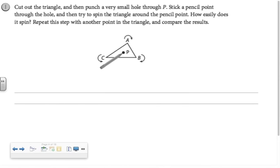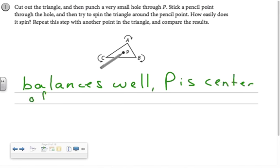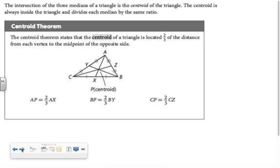In this activity, cut out the triangle and punch a small hole through P and try spinning the triangle around the pencil point. How easily does it spin? It should spin very easily. Point P, the centroid, your book calls it the balancing point. Other textbooks may call it the center of gravity. Here we have the centroid theorem, which is saying that the length of the segment from the vertex to the centroid is two-thirds the length of the entire median.